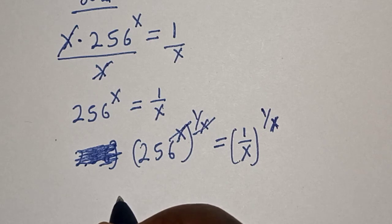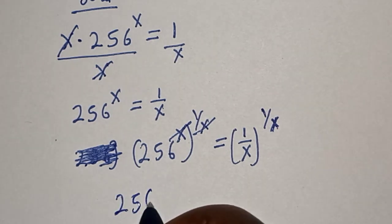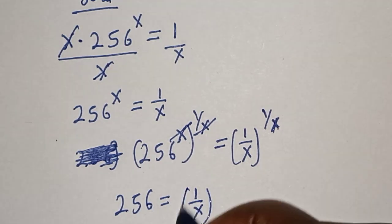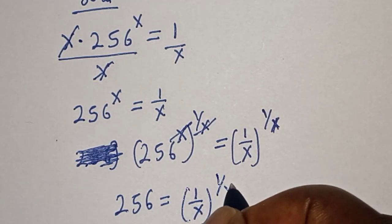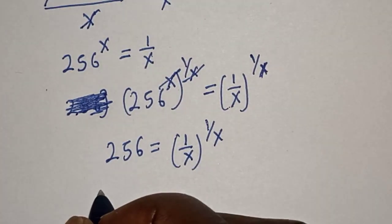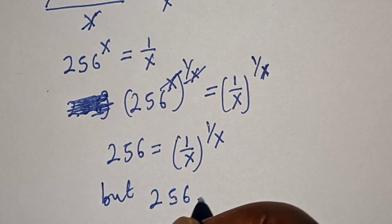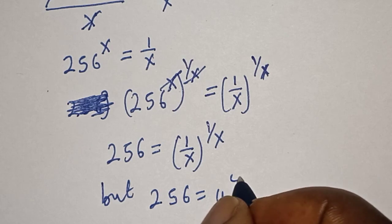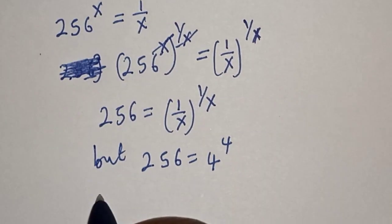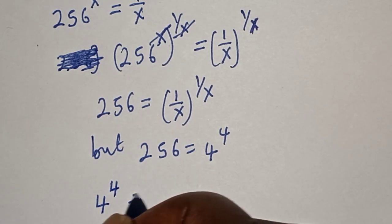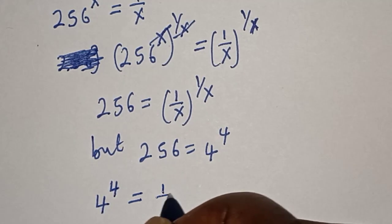We have 256 is equal to 1 over x raised to power 1 over x. But 256 is equal to 4 to the power 4. Then let's substitute: we have 4 to the power 4 is equal to 1 over x above 1 over x.